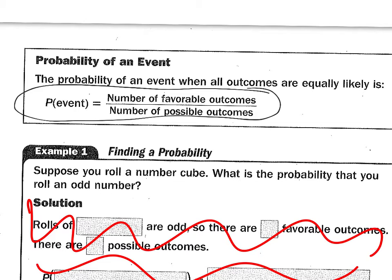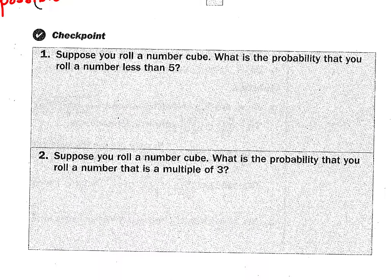The probability of an event occurring is the number of favorable over the number of possible outcomes. Example one says, suppose you roll a number cube. What's the probability that you roll an odd number? So what I would do is put probability of an odd, and it's asking for probability. So how many favorable outcomes are there that are odd on a number cube? Odd of how many total? And then reduce it. What do you get? One half.